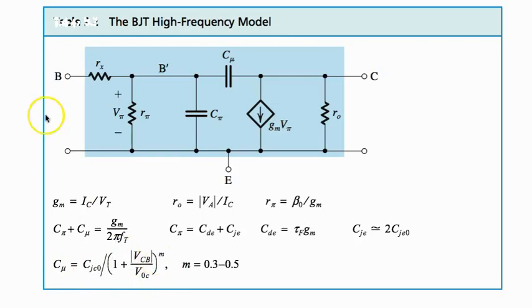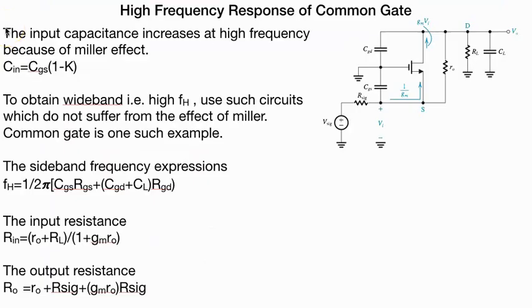Now the high frequency response of common emitter: if you look at the following figure, we will see that the input capacitance increases at high frequency because of the Miller effect. C_in equals C_GS times 1 minus K.